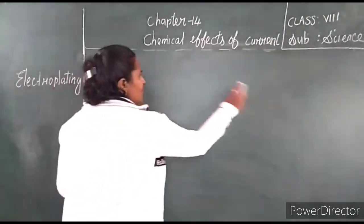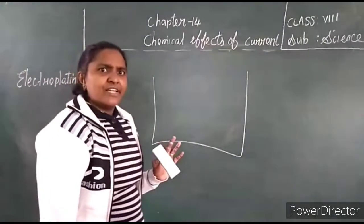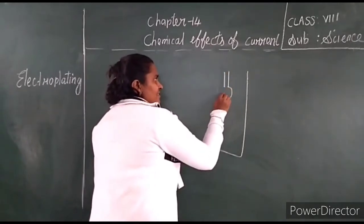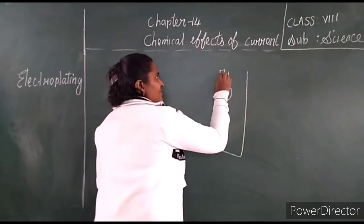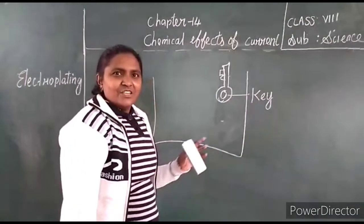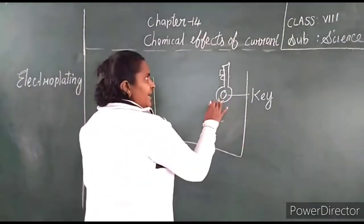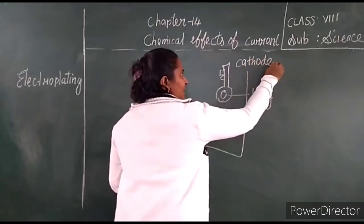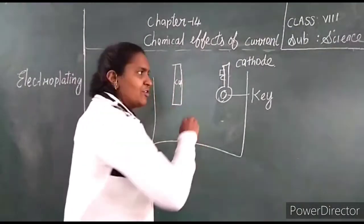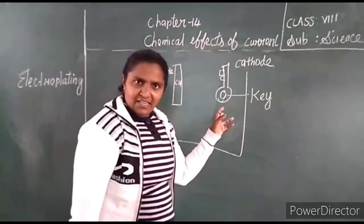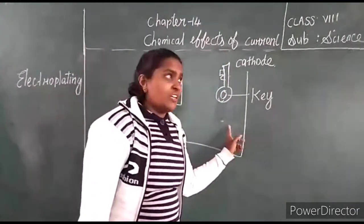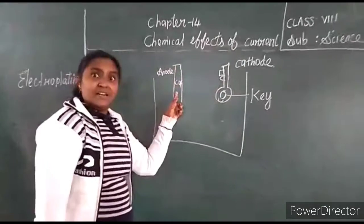Now we are going to see an example. You are going to electroplate your key. It is a key — I assume this is a key. You want to coat your key with copper. You keep the key at the cathode, and you take a copper strip or copper piece, which you keep at the anode.